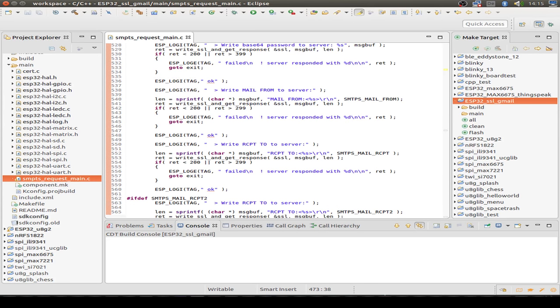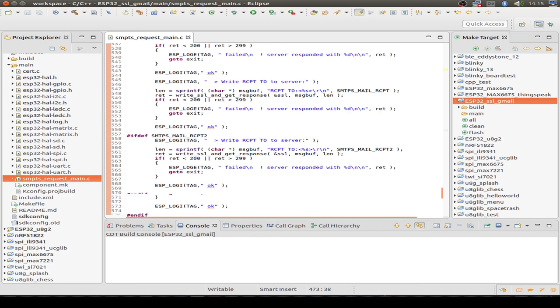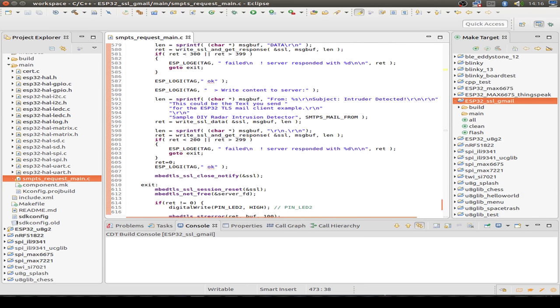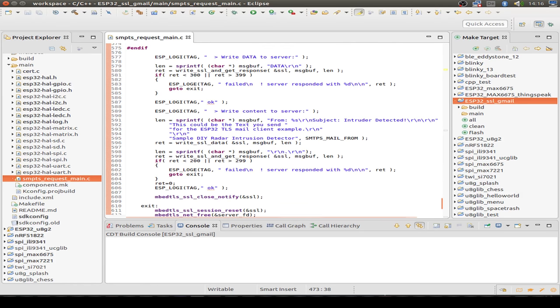Then we send our login and our password in base64 notation. And if we're logged in, we just send our email header, the from, the recipients, and so on. And then we send our message. And in this instance, we send something like 'an intruder is detected'. And maybe we send also the position if we have more than one sensor. And that's all.